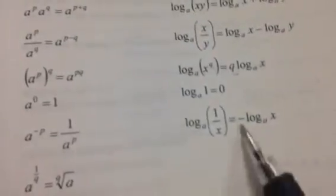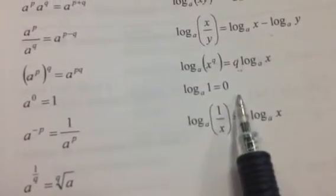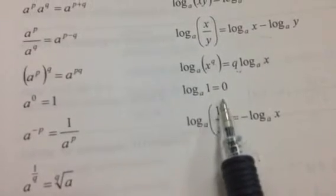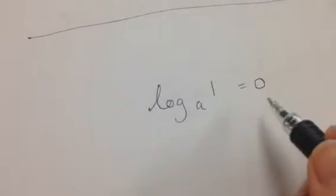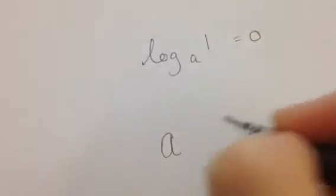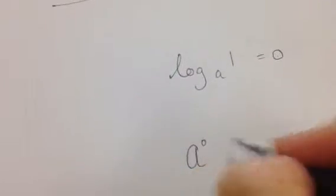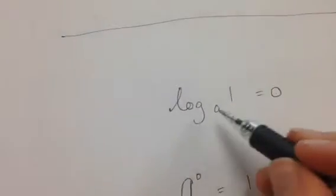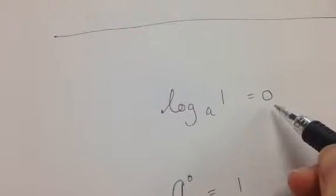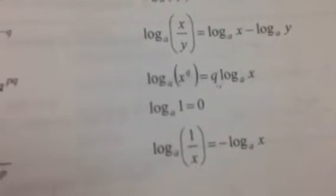Rule 4: log of 1 in any base is 0. This makes sense because if I take it out of log format, the base is a, the power is 0, and any number to the power of 0 is 1. So whenever I see log of 1, I can immediately say it equals 0.